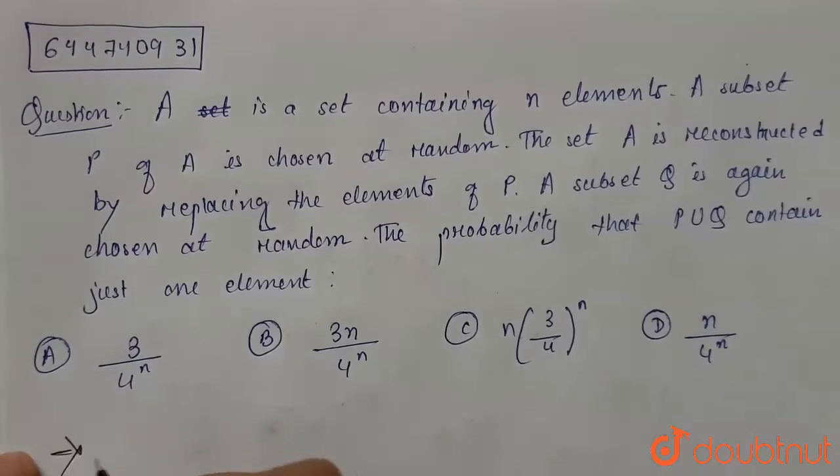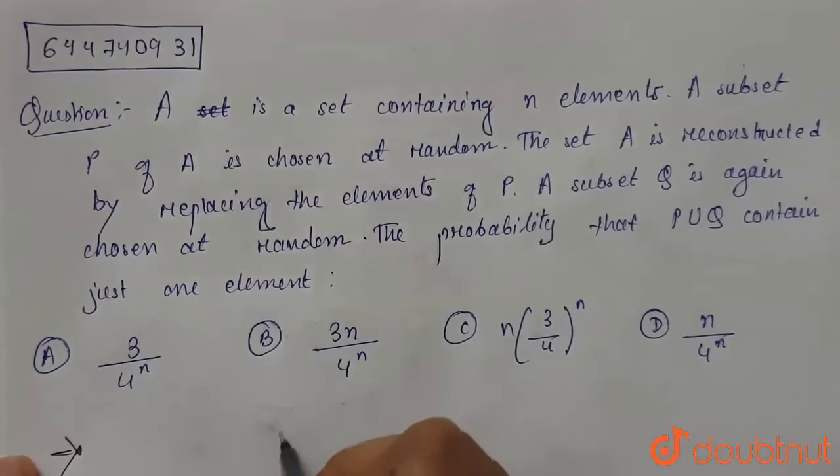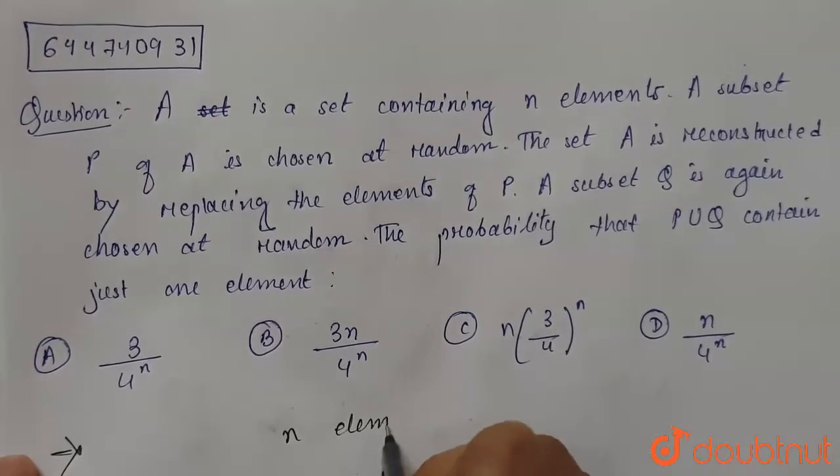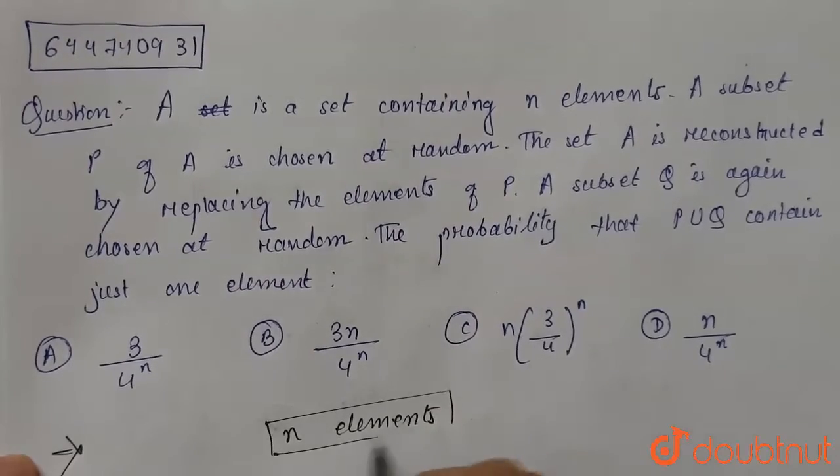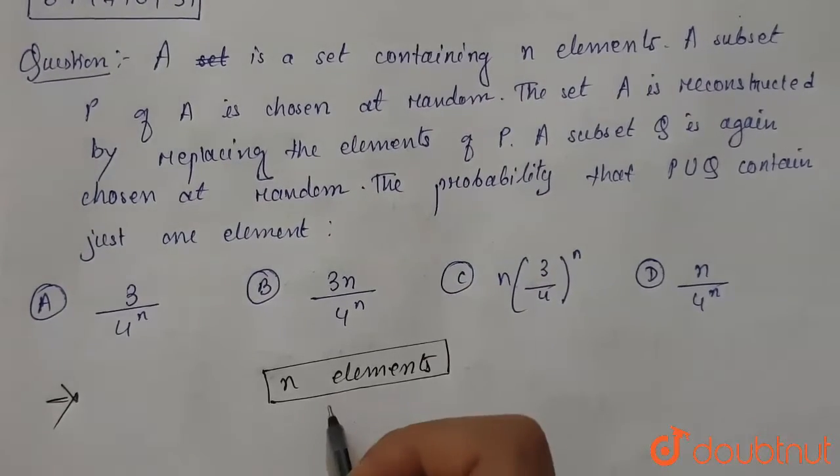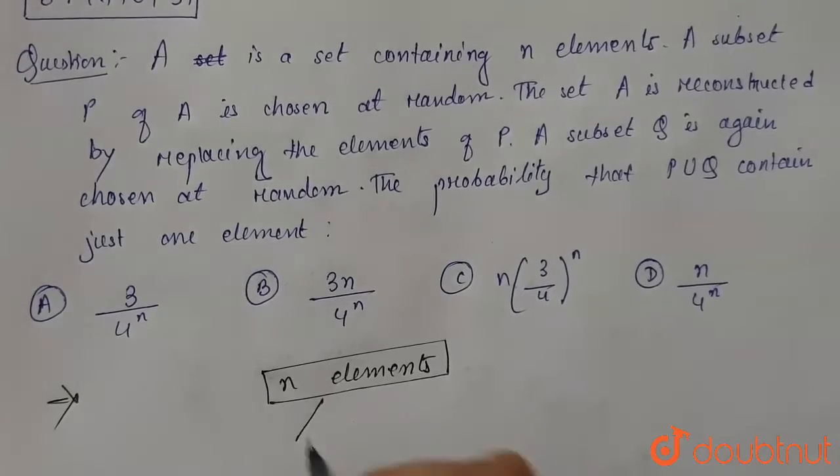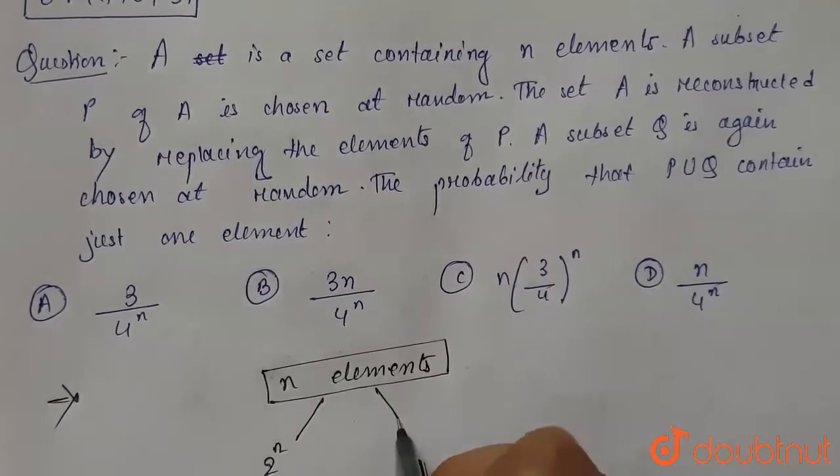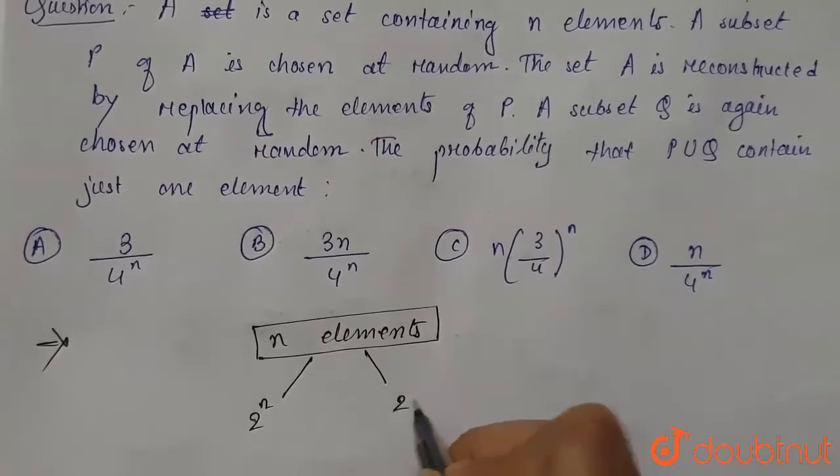In the question we are given set of n elements. From here we can choose subset, ways to choose subset P is 2 to the power n. Similarly, ways to choose subset Q is also 2 to the power n.